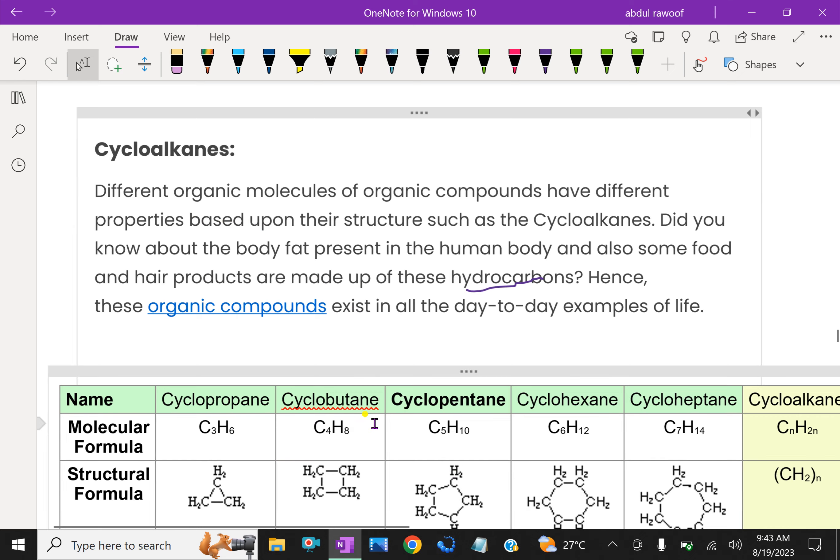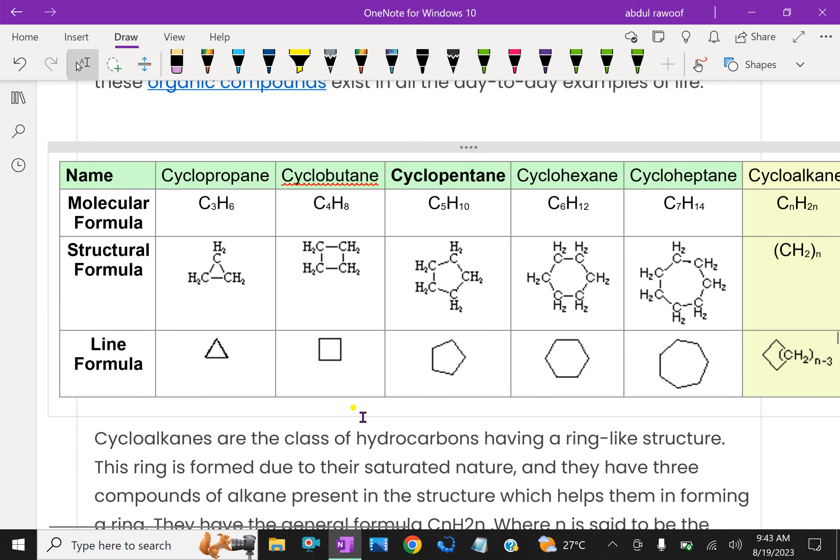Cycloalkanes are very useful. Look at this tabular form. Here, molecular formula C3H6, that is cyclopropane. Cyclopropane is triangular. That line formula is triangular. Cyclobutane, that is C4H8. General formula is CnH2n.